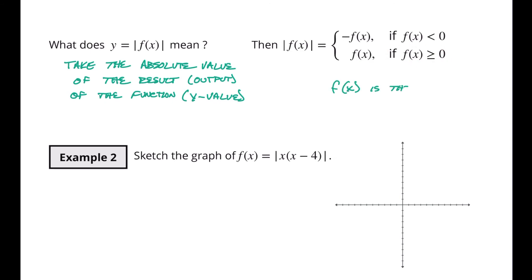So the F of X is the output, the result, the Y value. If the Y value is less than zero then take the opposite of that. So this is take the opposite of the result or again of the output.